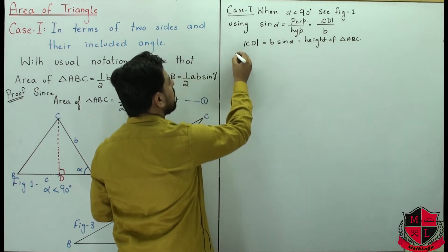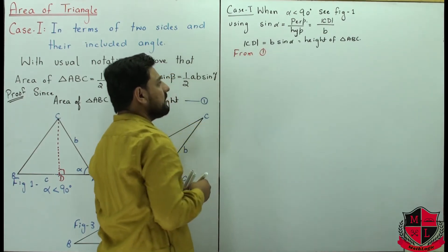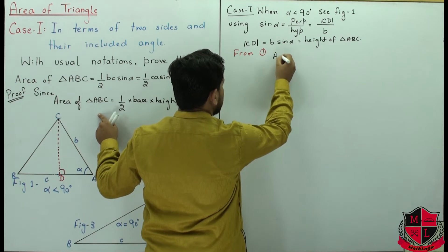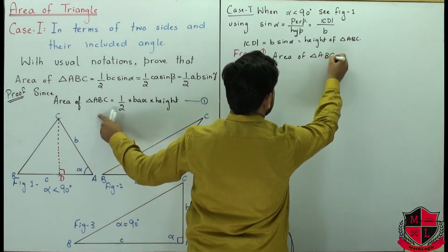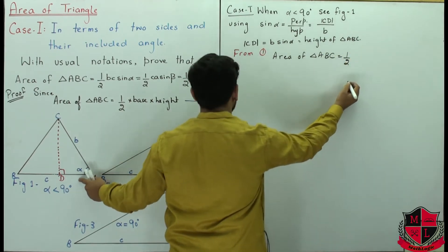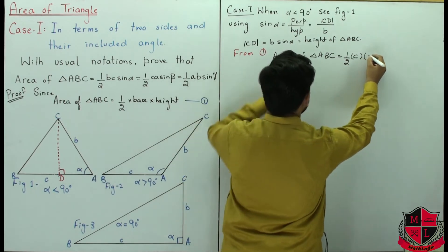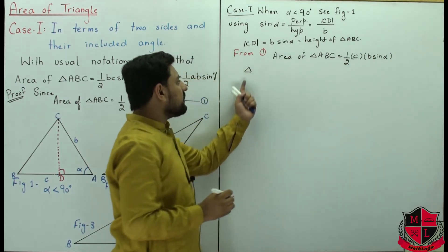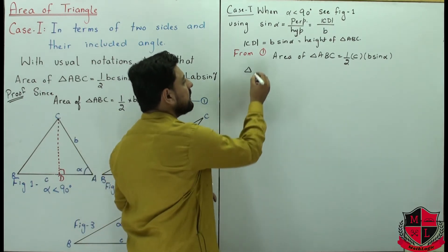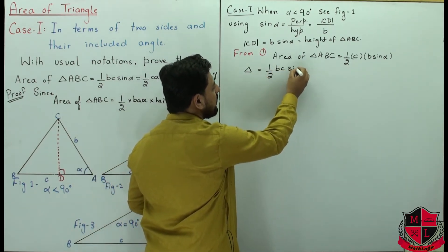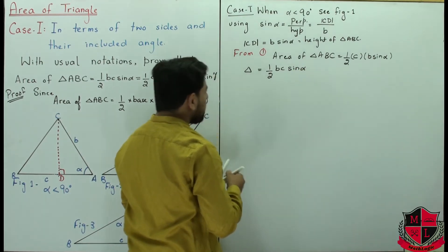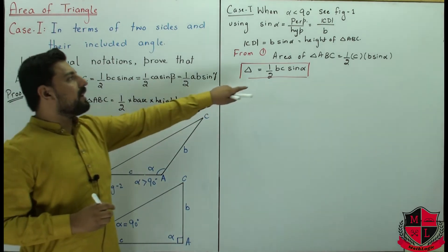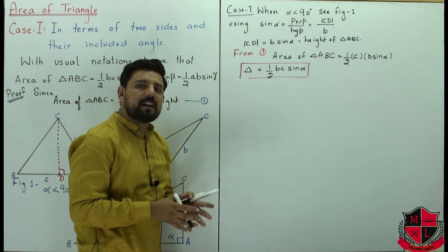Now substituting back into the area formula: area of triangle ABC = half times base times height = half times BC times CD = half times BC times b·sin α. Wait — base is BC (length a) and height is b·sin α, so area = (1/2)·BC·sin α. This is exactly the formula we wanted to derive: area = ½·bc·sin α. This completes Case 1 when α is less than 90 degrees.